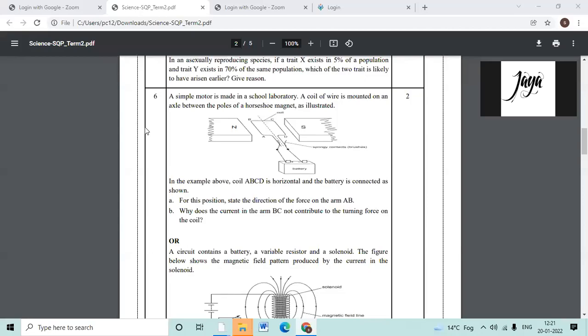Okay, first is a simple motor is made in a spool lab. A coil of wire is mounted on an axle between the poles of a horseshoe magnet as illustrated. For this position, state the direction of force on arm AB.